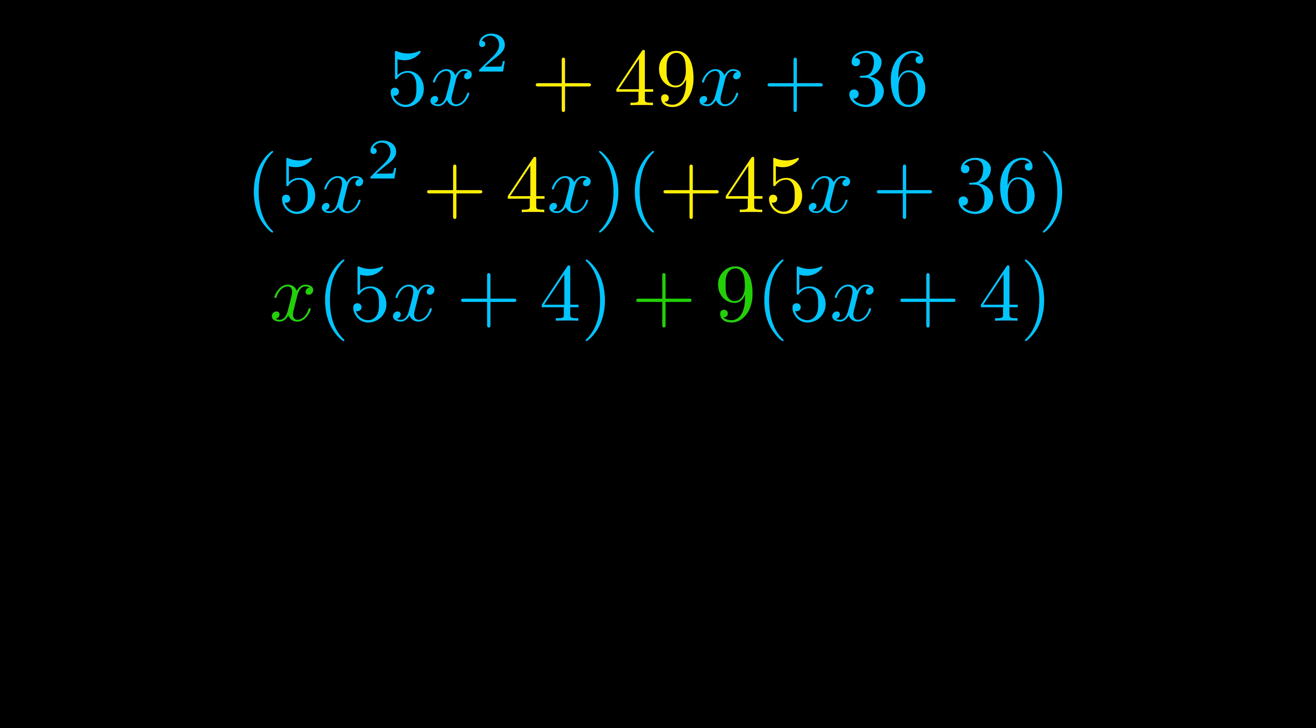Notice also how what remains inside of the parentheses is the same in both cases. The blue values are the same. Those blue values will become one of our factors and we will combine the two green values the GCFs that we pulled out to get the other one. And that is our fully factored equation.